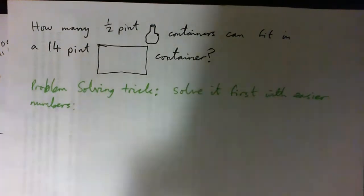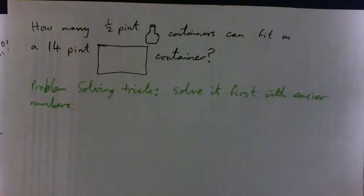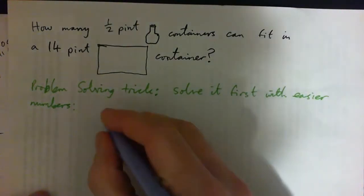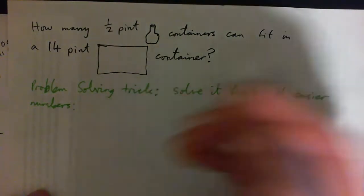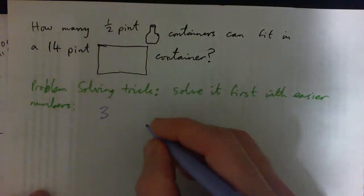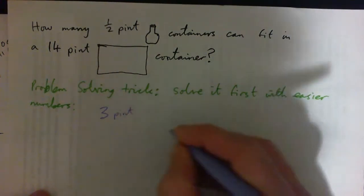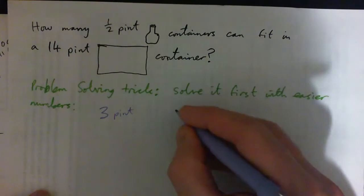Just make up easier numbers. Think of two easy numbers like 3 and 12. So how many 3-pint containers would fit inside of a 12-pint container? Or how many 3-pint containers do we need to fill up a 12-pint container?